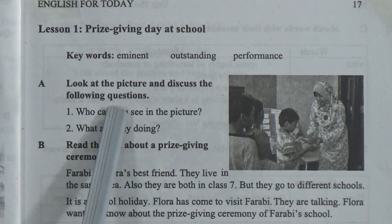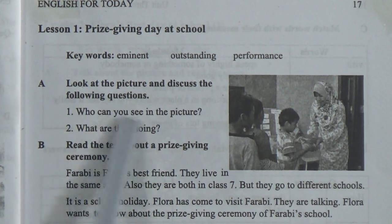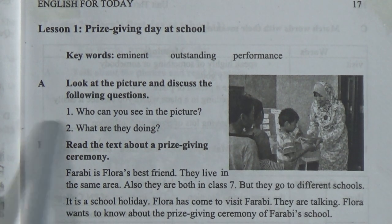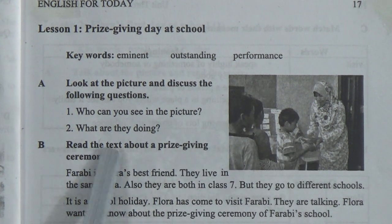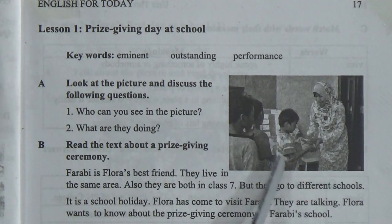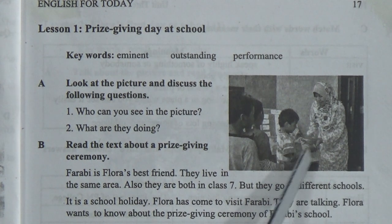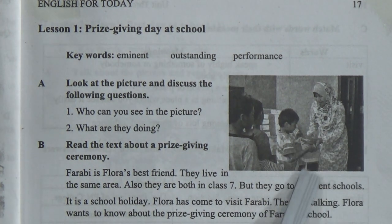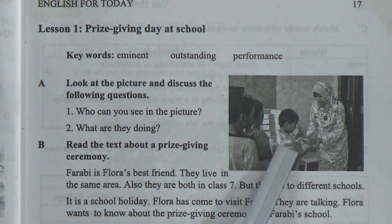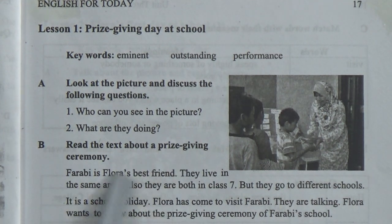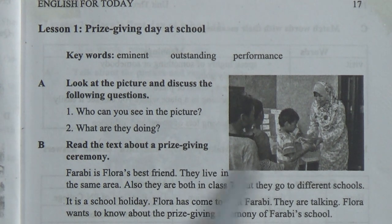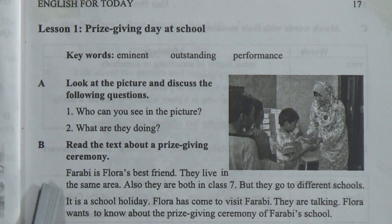Look at this picture. Who can you see in the picture? What are they doing? In the picture we can see a teacher is giving prizes to another — it may be a student or someone like that. And Task B: Read the text about the prize giving ceremony. This text is about the prize giving ceremony.